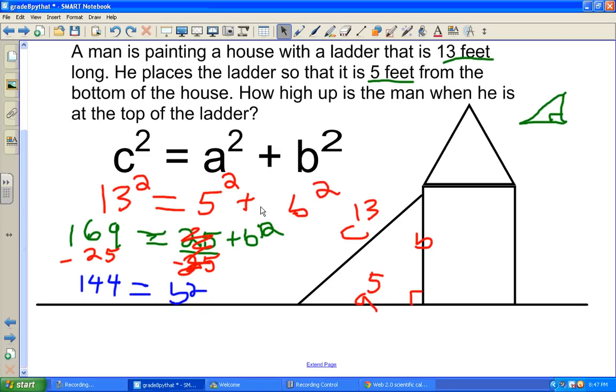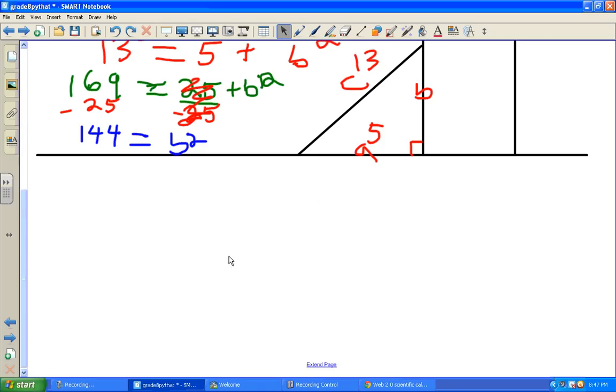So I'm going to move this down a little bit, just to make it a little easier to see. So this is what we are left with. 144 equals B squared.